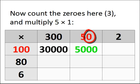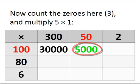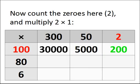Count the zeros here. There's one on the 50, and two on the 100, that gives you three zeros. Then you can multiply the five by the one, gives you five, followed by three zeros, 5000. Count the zeros here. As you can see, there's only two in the 100. So you multiply the two by the one, and it gives you 200.